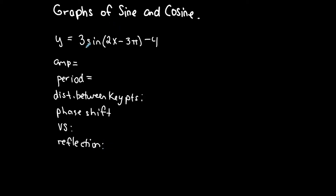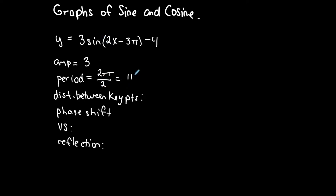The amplitude is always dependent on the coefficient of the function — in this case it is 3, and the amplitude is always the positive version of that. The period is always 2π divided by b, the coefficient of x. In this case, 2π divided by 2 which is π.